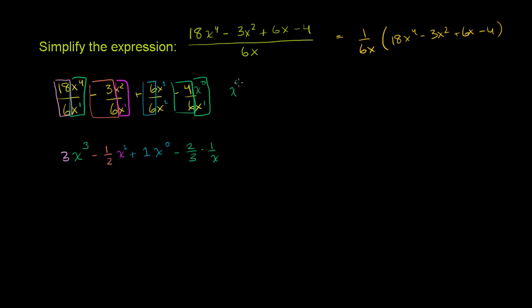And then when you try to simplify it using your exponent properties, you would have x to the 0 minus 1 power, which is x to the negative 1 power. So we could have written an x to the negative 1 here, but x to the negative 1 is the exact same thing as 1 over x.